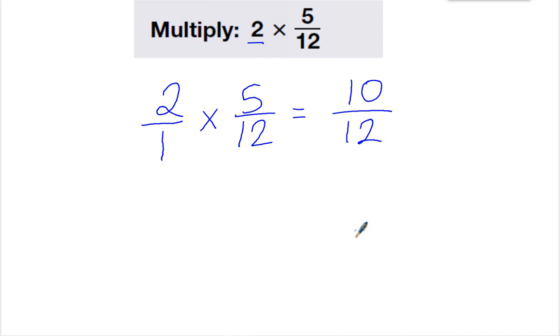So it's ten-twelfths. To reduce it, I need to think of what is the common factor. Since they're both even, I can divide both these numbers by two. Ten divided by two is five, and twelve divided by two is six. There is no other common factor between five and six, so that's as far as I can reduce it.